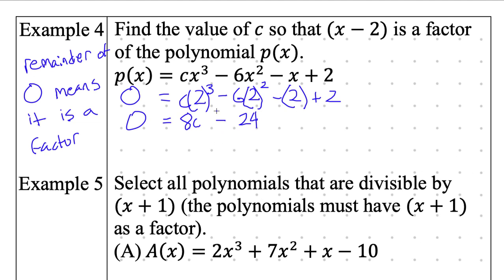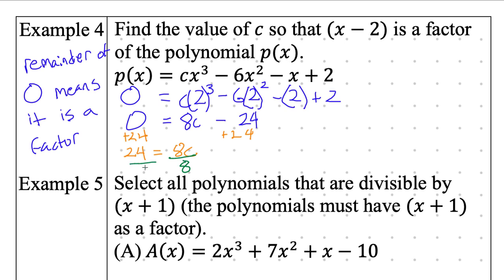From here, I'm going to solve. I'm going to add 24 to both sides. When I add 24 to both sides, I get 24 equals 8c. Then, to solve for c, I divide both sides by 8 — the inverse operation of multiply by 8 is divide by 8. C is therefore equal to 24 divided by 8, which is 3. A value of c equals 3 will make x minus 2 a linear factor.